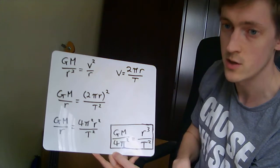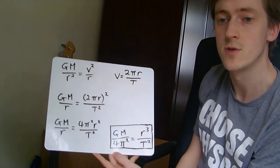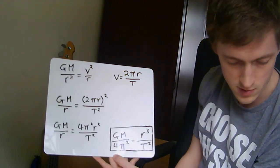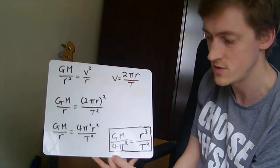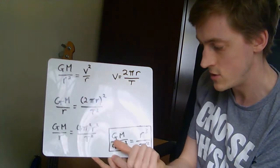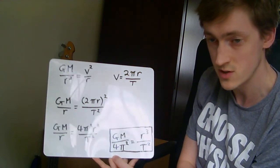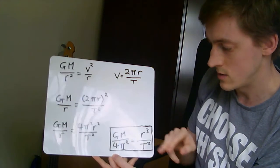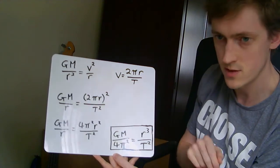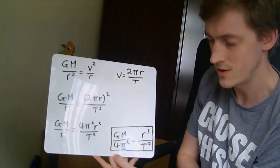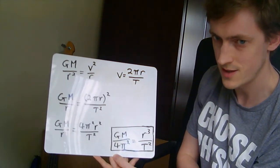So all it's saying is that r³ over T² depends on one thing and one thing only. It only depends on the mass of the object you're going around. So if you go around the sun, for example, all the planets going around the sun will all have the same value of GM over 4π² because they will go around the object, which is the sun, and it will be the same mass of the sun for each object going around the sun.